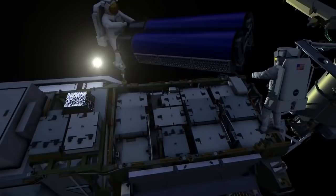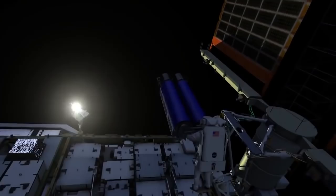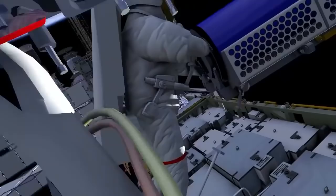He then rotates Shane into position so that IROSA is handed off to the next point. Thomas ingresses his foot restraint and receives IROSA. Shane egresses his foot restraint, moves outboard, and gets into position to help Thomas install IROSA onto its final location on the mod kit.